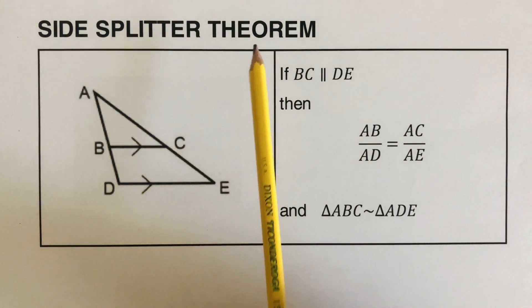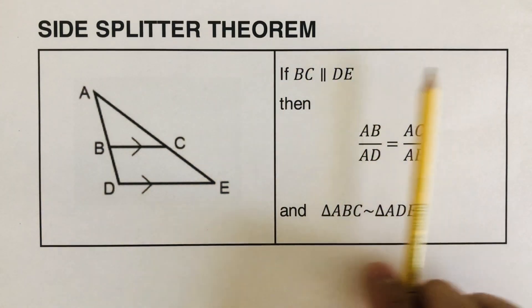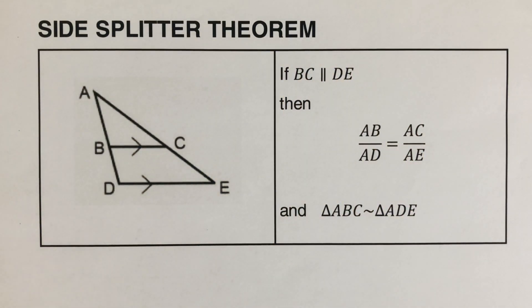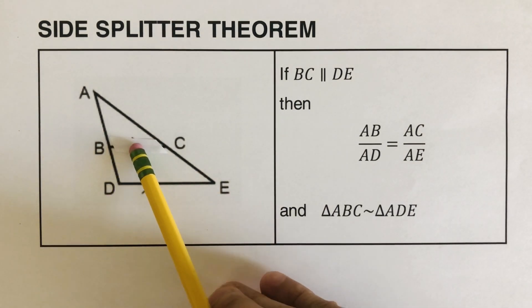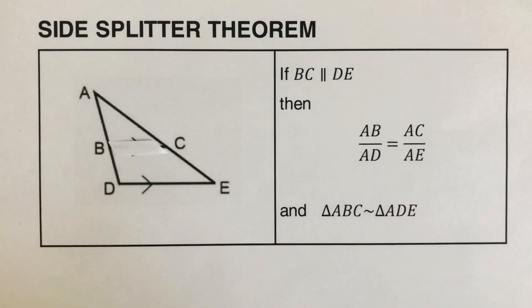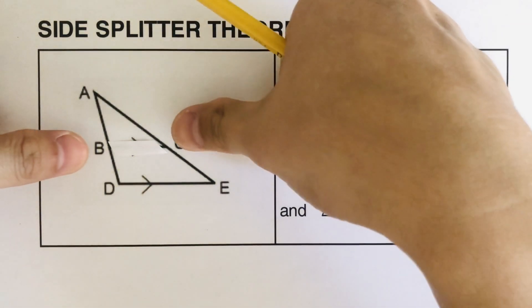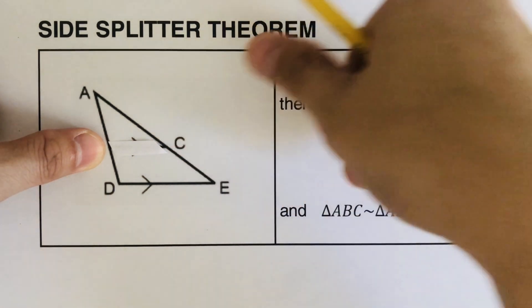The side splitter theorem is part of SAS. Before we jump into the statements, I'd like you to notice that this picture is made up of two triangles. The first triangle is the big triangle — without that line in the middle, that's the big triangle. We call this triangle ADE.